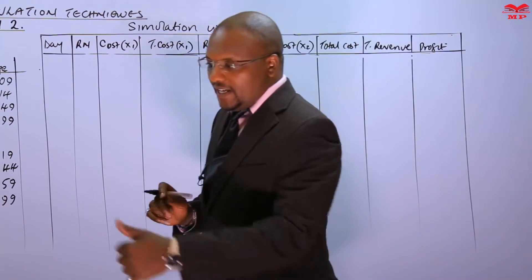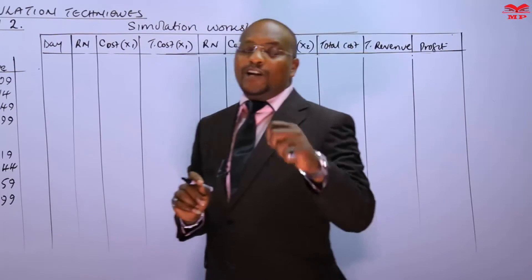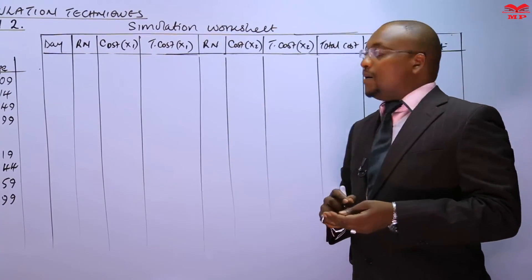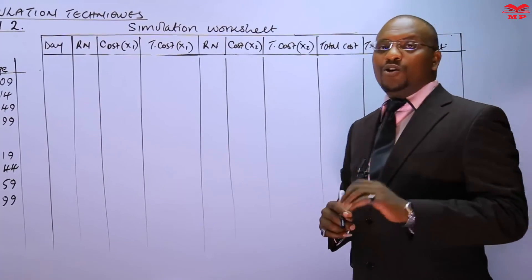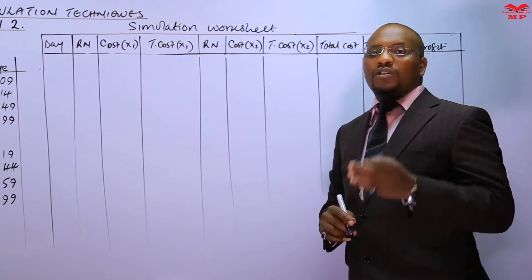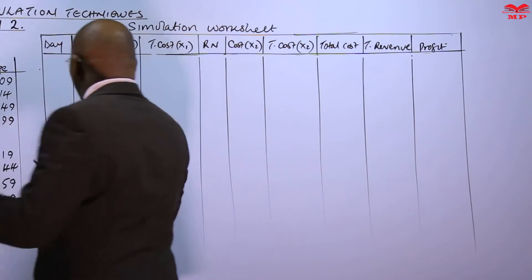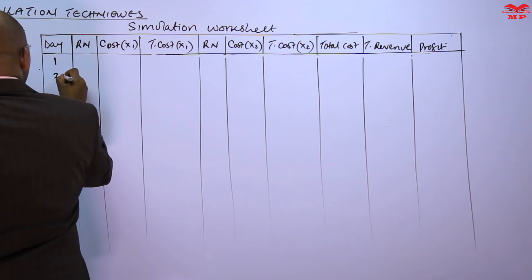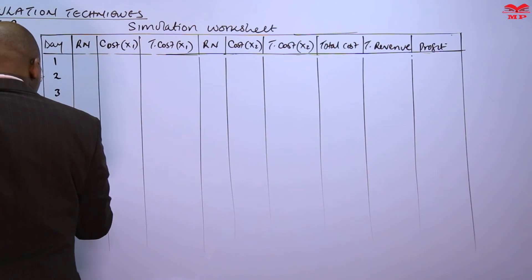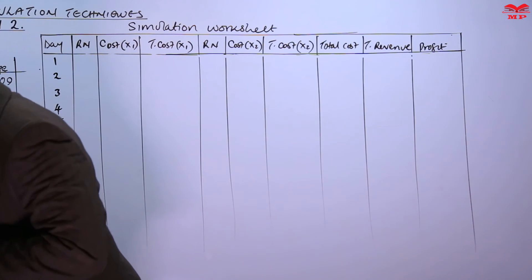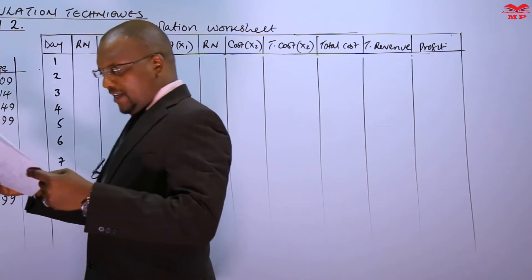Now, when you're given this one set of random numbers, those numbers will be shared by the cost of X1 and the cost of X2. Therefore, we're going to write them across, not downwards. We're going to write them across. So in each of the days, we have day 1, 2, 3, 4, 5, 6, 7, 8, 9, 10. So that now we can have the numbers in this way.